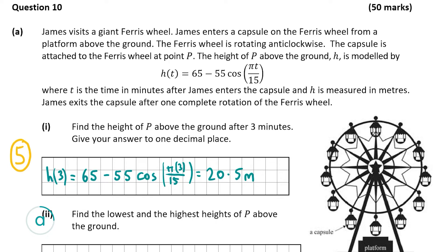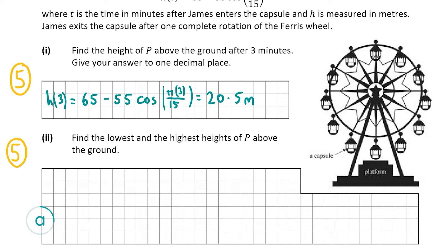Now for A part 2, also worth 5 marks, we have to find the lowest and highest heights of P above the ground. The key observation is that the variable T is only in the cosine part. The 65 and 55 are constants. Cosine of any angle is always between -1 and 1, inclusive, so cos(πT/15) must also be between -1 and 1. We substitute each extreme value into the function to find the maximum and minimum heights.